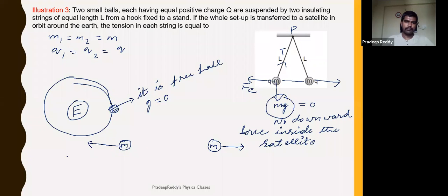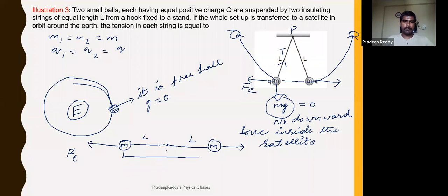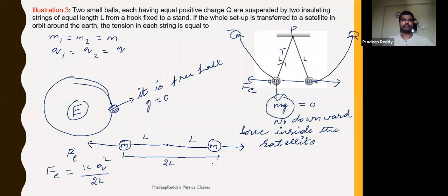These two masses are being pulled outward by the electrostatic force Fe. As a result, these two masses come into a straight horizontal plane — just as I am showing in the diagram. Since there is no gravitational force in the downward direction, each string length is L, so the total separation between the two masses is equal to 2L. The electrostatic force Fe is equal to kQ² divided by (2L) squared.